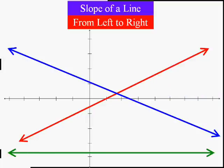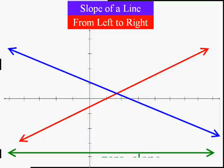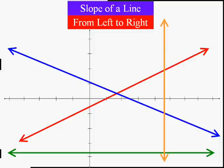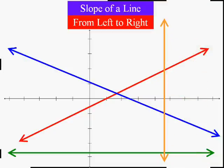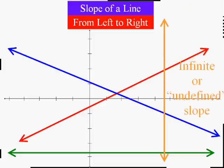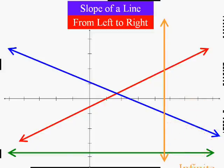I bet you know what this slope is — it's a flat line, so the number associated with the slope of that line is zero. And there's really only one other possibility: a line that looks like this. And if you tried to walk on that line, you would fall and you would fall forever — all the way through hell, past purgatory and keep going. That's why we call the slope of that line undefined, or infinite.